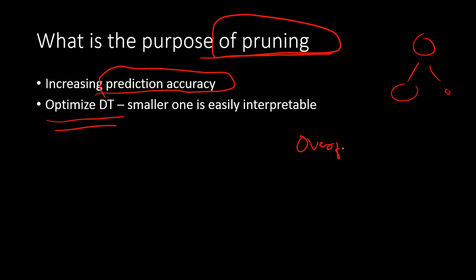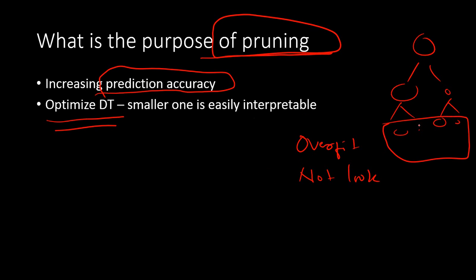Firstly, a large tree would overfit. Secondly, it would not look very good — one of the merits of decision tree is that you can visualize it, and with a bigger tree it is very difficult to interpret. So a smaller tree is always better. Pruning helps do that: it optimizes the tree, gets rid of unimportant branches, and makes it smaller and more compact. It also gives importance to the most important variable for prediction or classification. Basically, pruning optimizes your decision tree by reducing its length, thereby increasing its prediction accuracy.